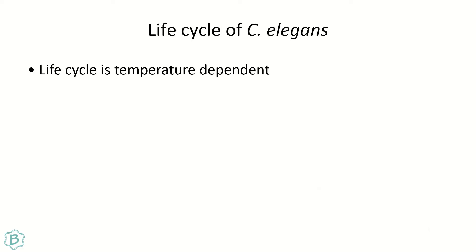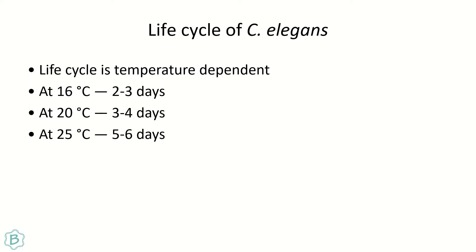The life cycle of C. elegans is temperature dependent. At 16°C, development takes 2–3 days. At 20°C, it takes 3–4 days. At 25°C, it takes 5–6 days. So the whole life cycle of C. elegans development takes different time intervals at different temperatures.